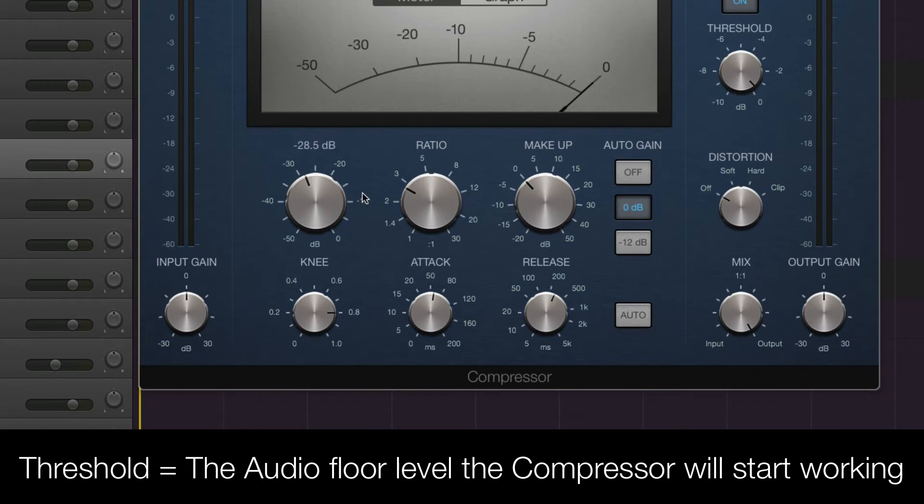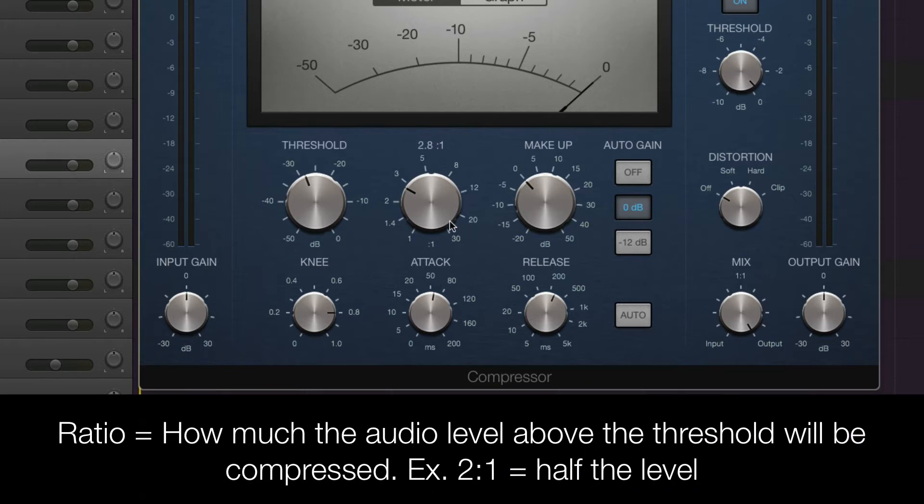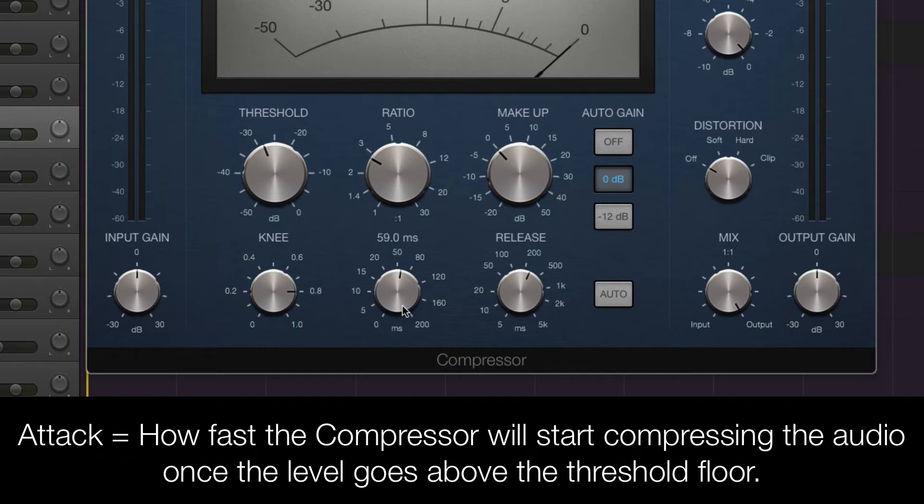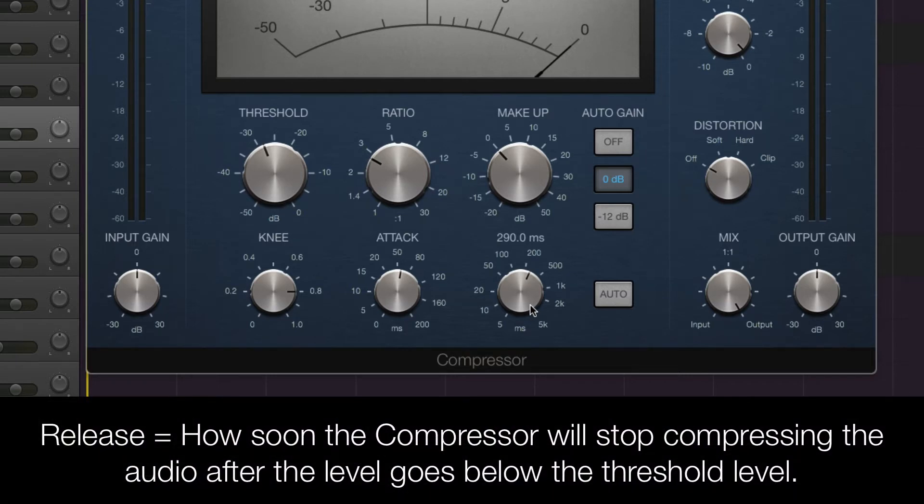The threshold is set at almost minus 30 decibel, which is quite low, so the compressor will have much audio to work with. The ratio is at a medium setting, at almost 3 to 1. The attack, this is the important part, is set at around 60 milliseconds, and the release on about 300 milliseconds.